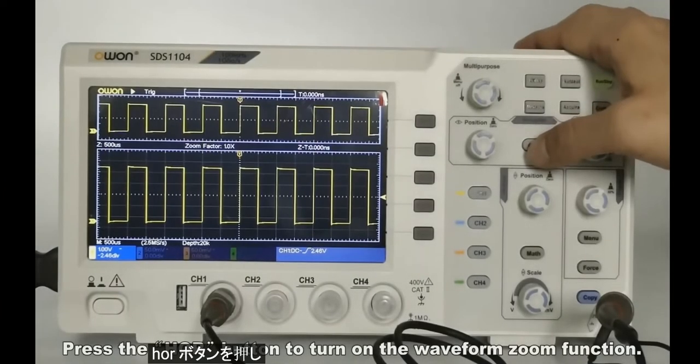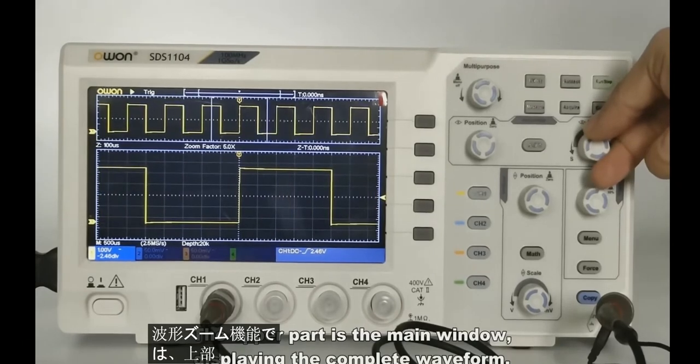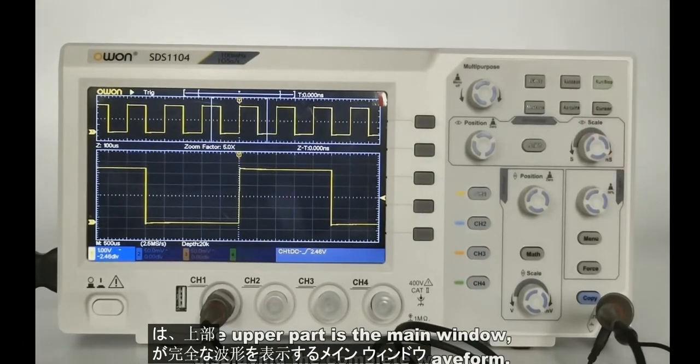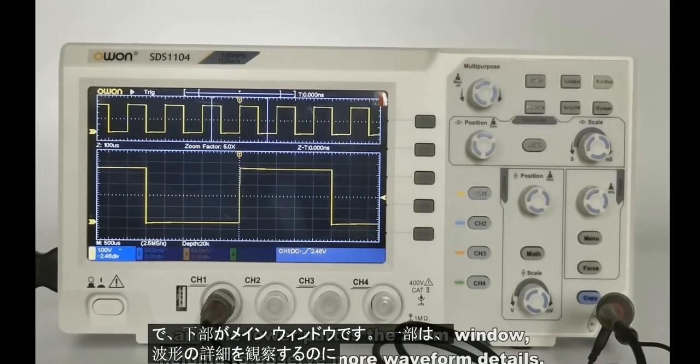Press the HOR button to turn on the waveform zoom function. The upper part is the main window displaying the complete waveform, and the lower part is the zoom window, helping to observe more waveform details.